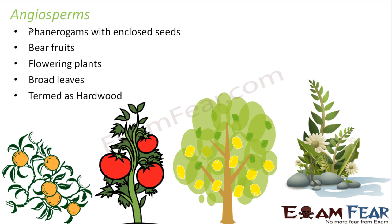Angiosperms are termed as hardwood, whereas gymnosperms are known as softwood. Some examples of angiosperms would be lemon, orange, rose, tomato, and sunflower. These plants have a variety of sizes — you have small shrubs like the rose plant, and you also have huge plants like mango trees. So their size is quite diverse, ranging from smaller to larger.